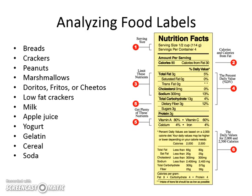On the right-hand side, number four, the percentage daily value tells you what percent of your daily diet that serving counts as. So if you had three grams of fat, that would be five percent of what your body needs for the entire day in that one serving. Number five lists things you need to get plenty of, such as proteins and vitamins. Number six gives a basic outline of a 2,000 and 2,500 calorie diet and the daily values recommended based on those.